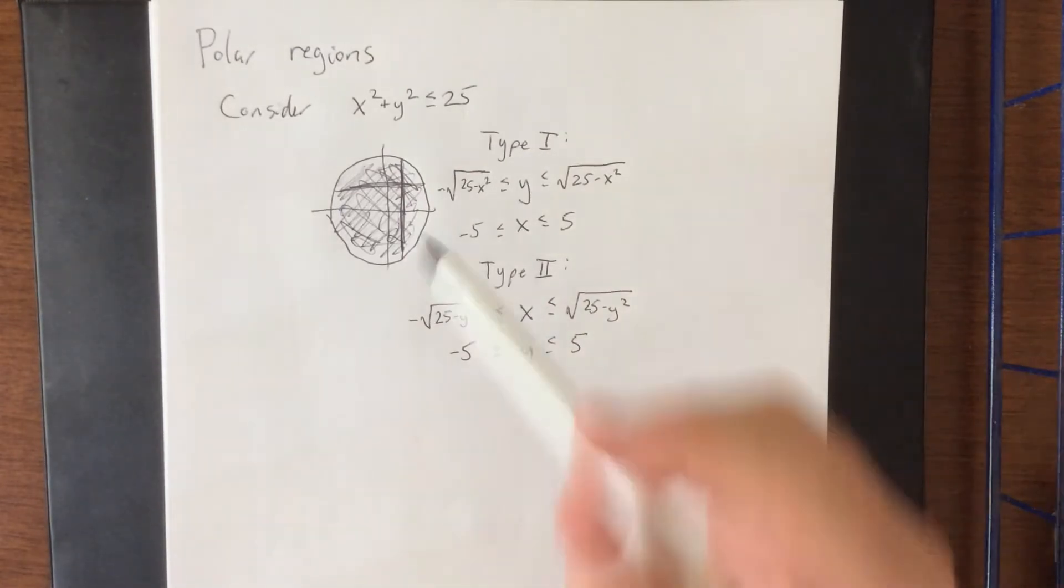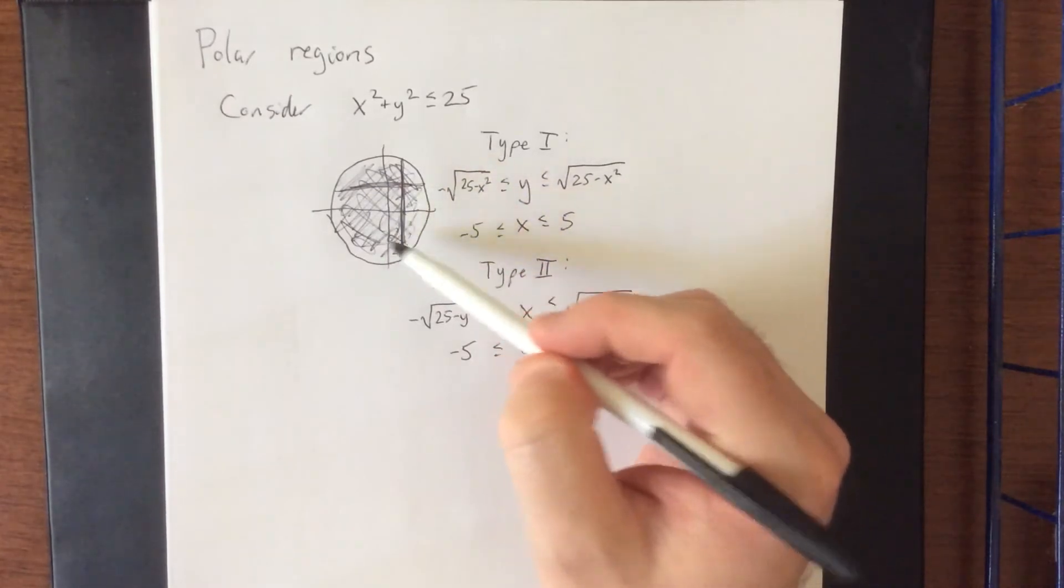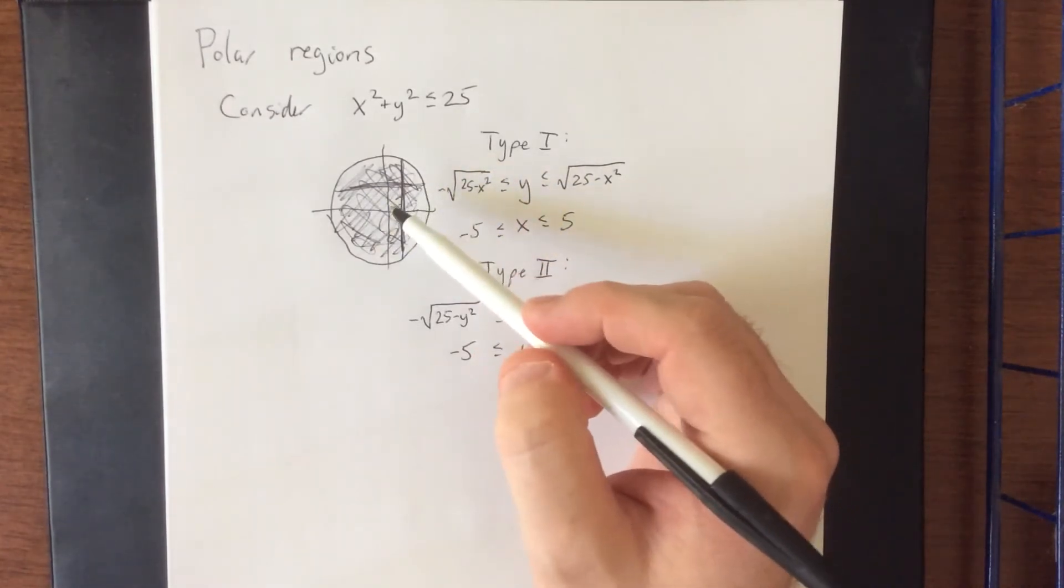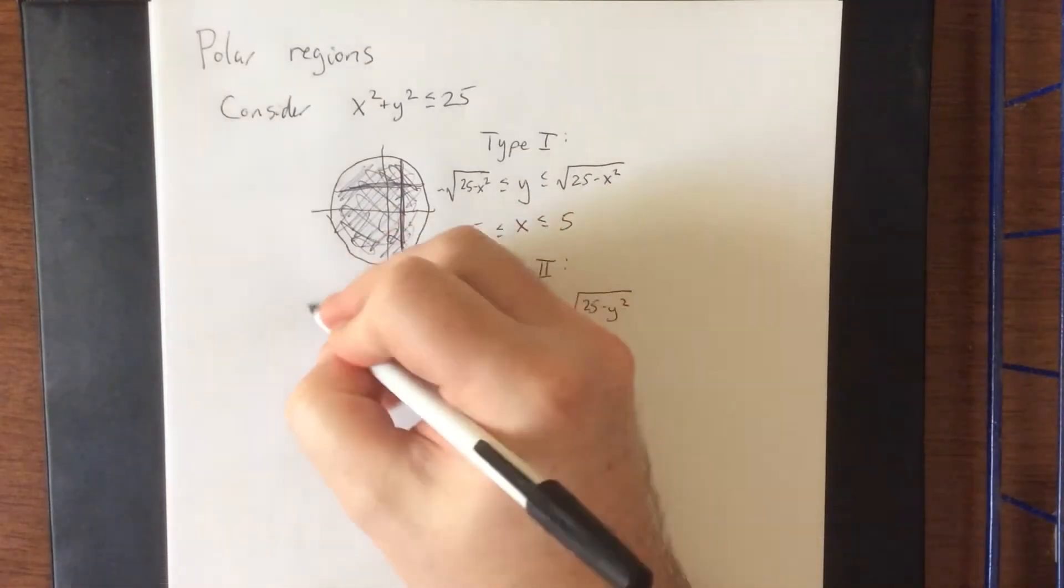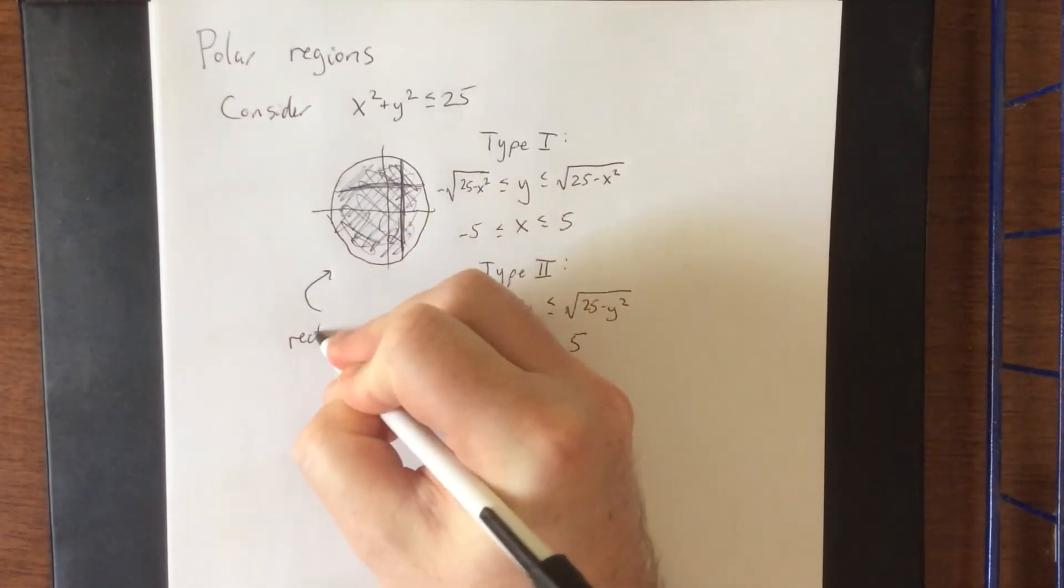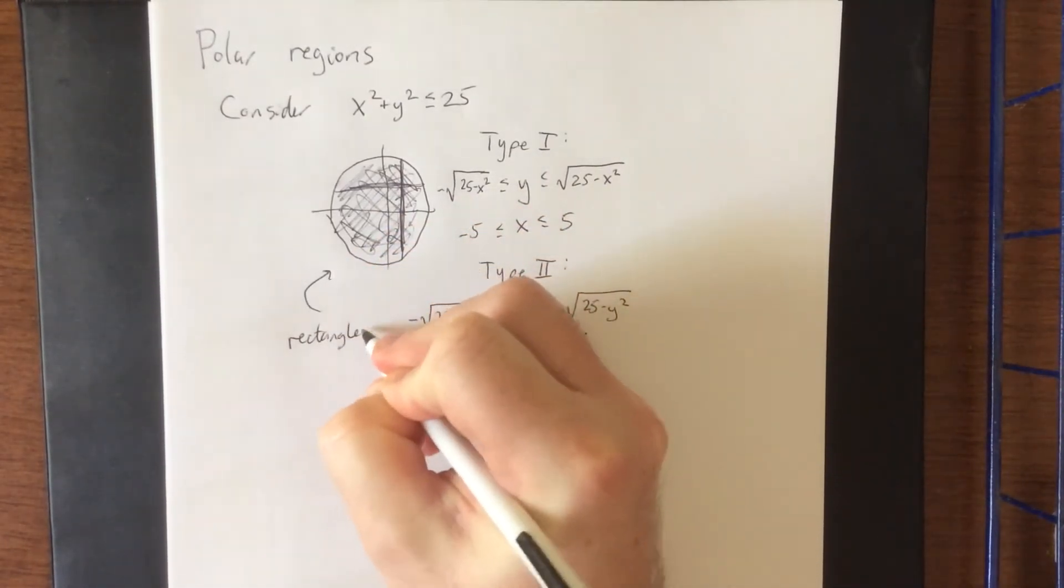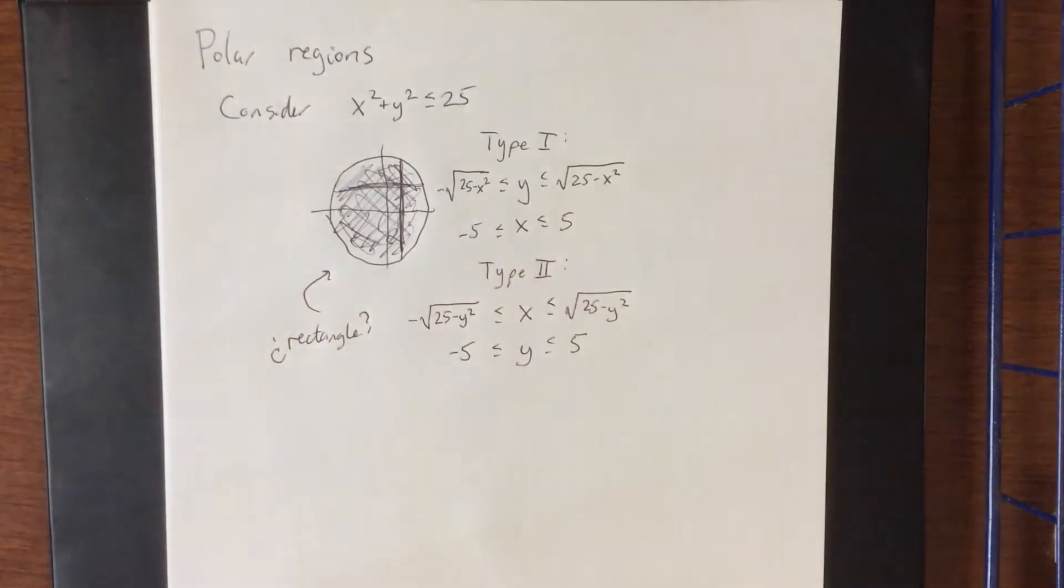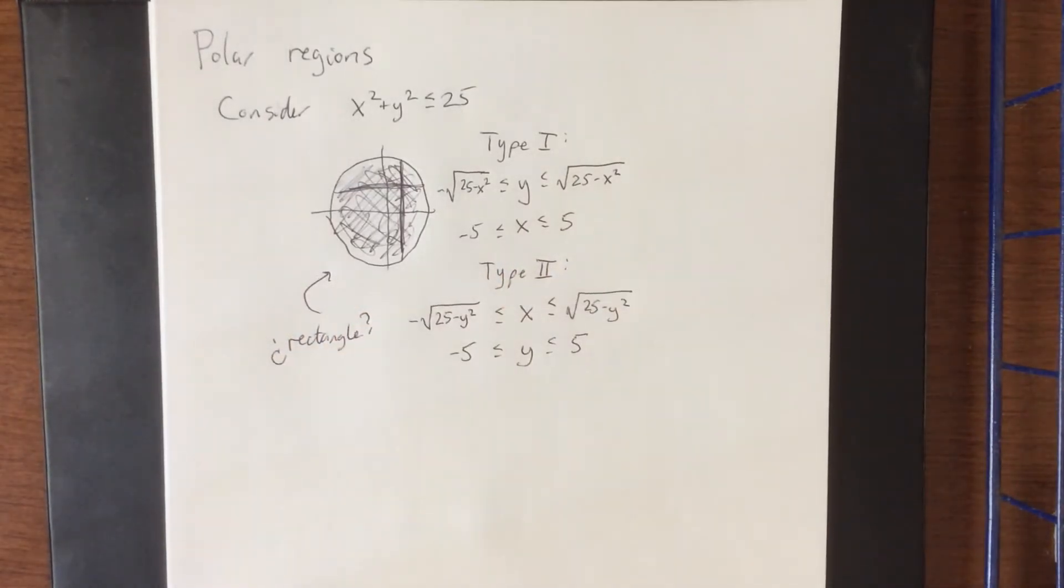Now, what if I told you that this thing up here that looks like a disk, a circle plus its interior, is not actually a disk, but rather this is a rectangle. Now, I imagine there are probably some questions about that, like, isn't a rectangle supposed to be comprised of four sides that are all perpendicular to each other, and two pairs of them are parallel? Like, how on earth could that possibly be a rectangle?